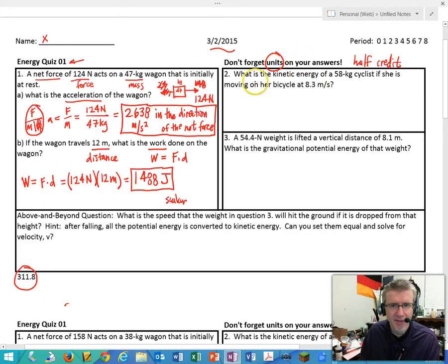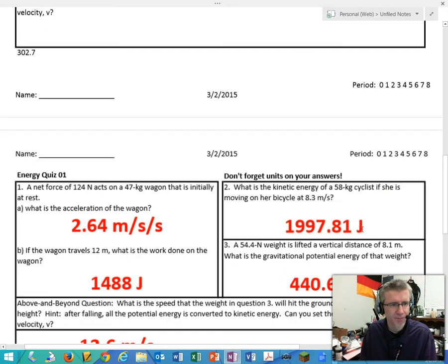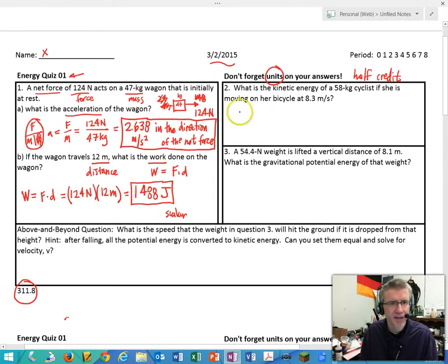Alright, let's see how I'm doing if I got these answers right. Yep, okay, so far so good. Next question, number two. What is the kinetic energy of a 58 kilogram cyclist if she is moving on her bicycle at 8.3 meters per second? So this is a mass because it's kilograms, and this is a speed or a velocity, meters per second.